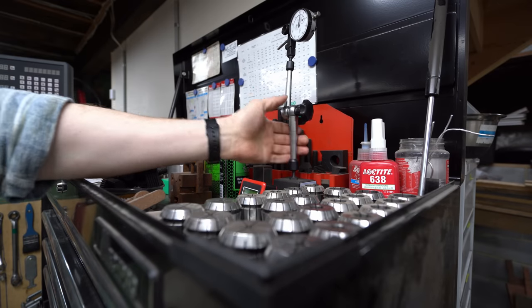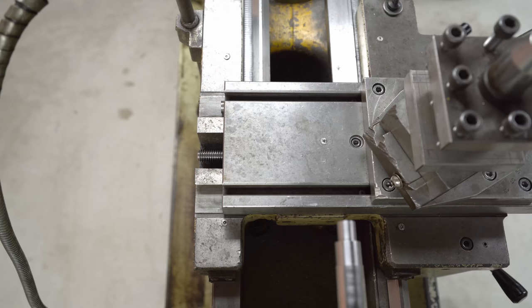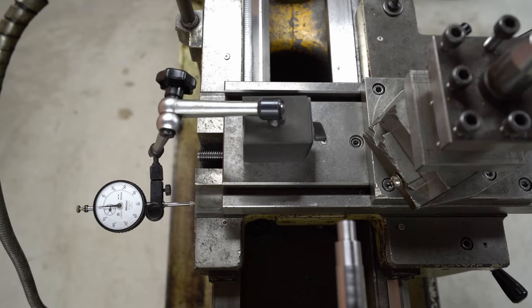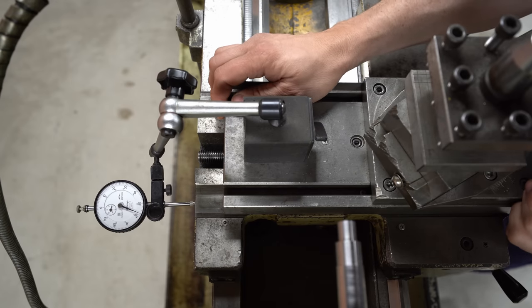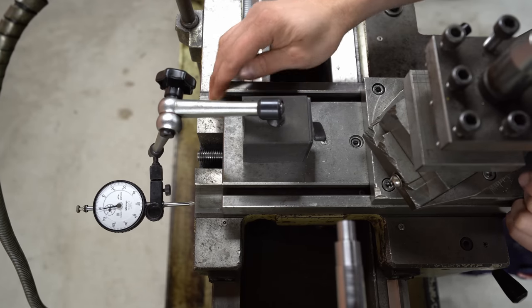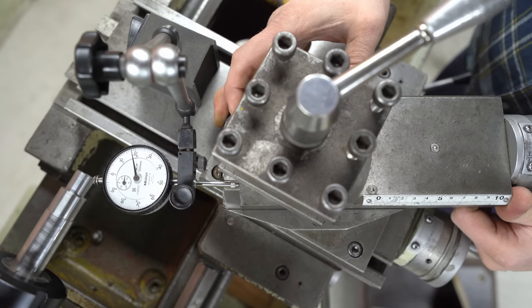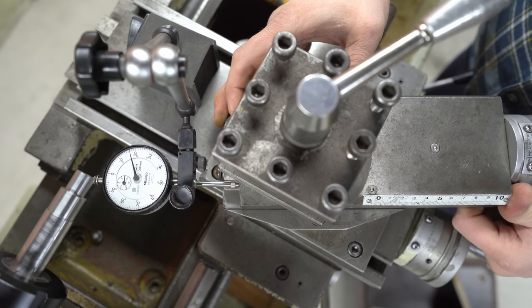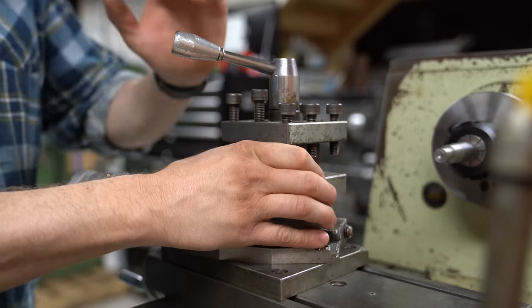Let's grab a dial indicator and have a closer look at things. On the crossfeed it looks like I've got about 0.6mm of play, or 24 thou. That's pretty terrible. On the compound it looks like I have about 0.2mm of play, or 8 thou. That's reasonable.